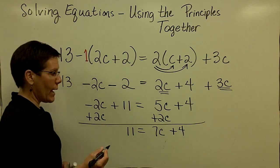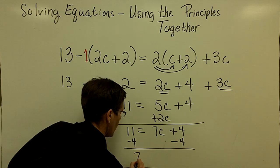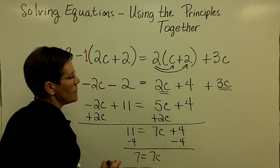And then I'm going to subtract 4 from both sides. And I have 7 equals 7c. I'm going to bring that over here. 7 equals 7c.